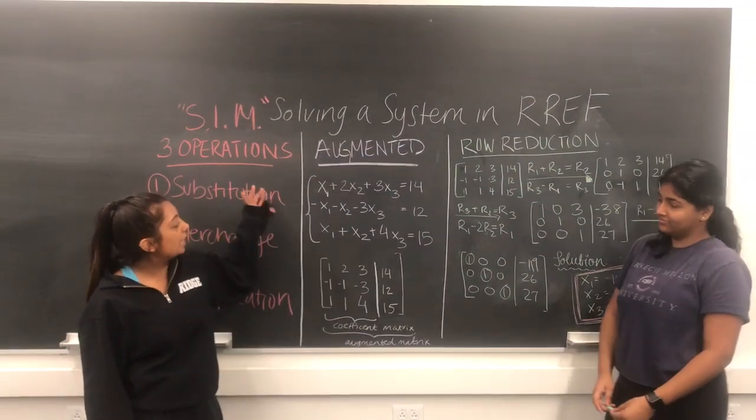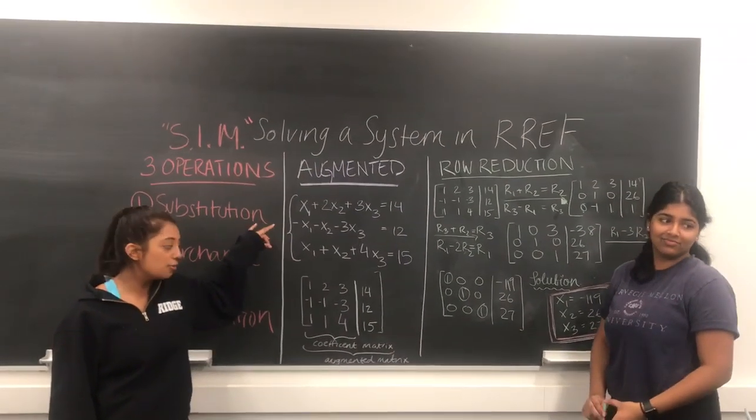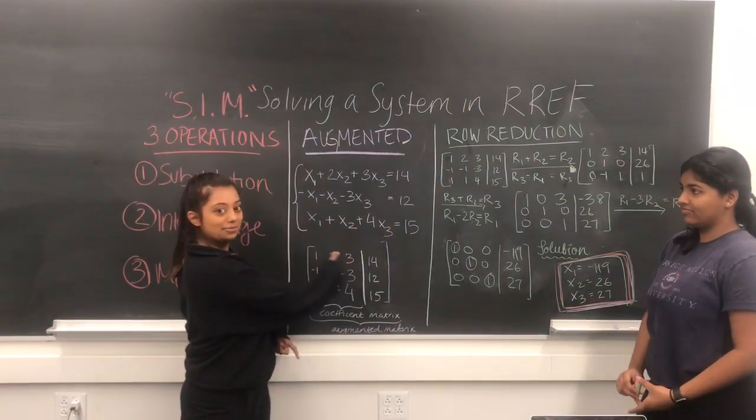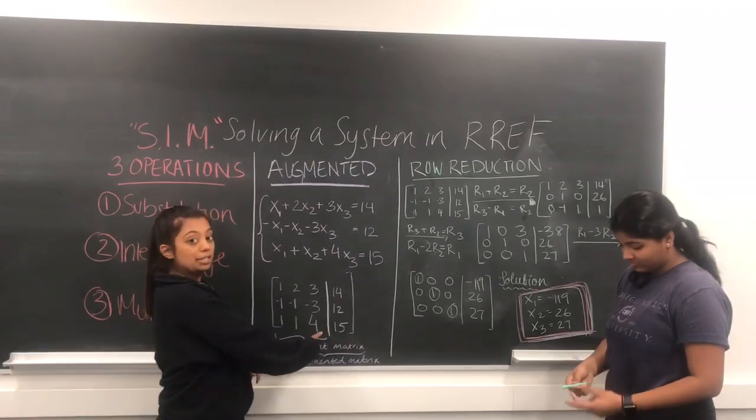So to start, we have our system here. We're going to convert the system into augmented matrix form, which is the coefficient matrix—these three rows and columns right here—in addition to the solution vector as one matrix.